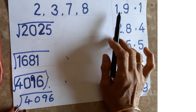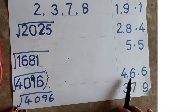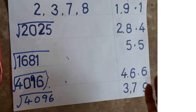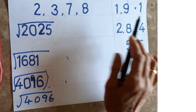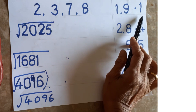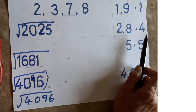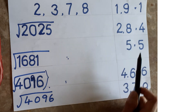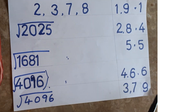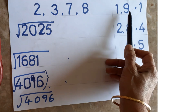See this concept: 1 and 9 give units digit 1; 2 and 8 give units digit 4; 5 gives units digit 5; 4 and 6 give units digit 6; 3 and 7 give units digit 9. How did this come? One squared is 1; nine squared — nine nines are 81 — units place is 1. Two squared is 4; eight squared — eight eights are 64 — units place is 4.